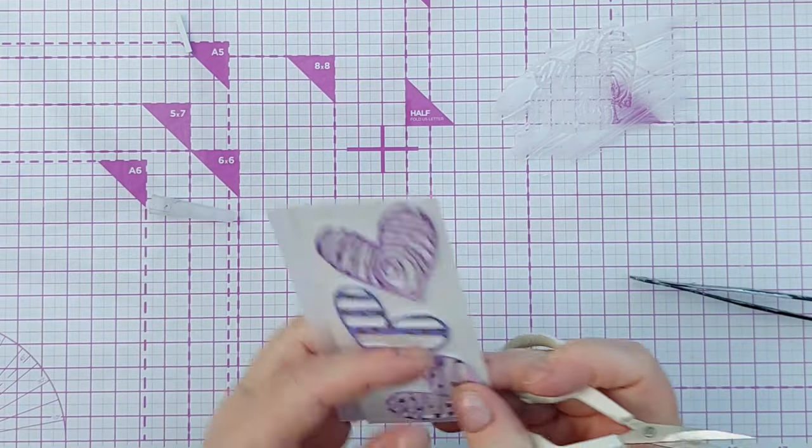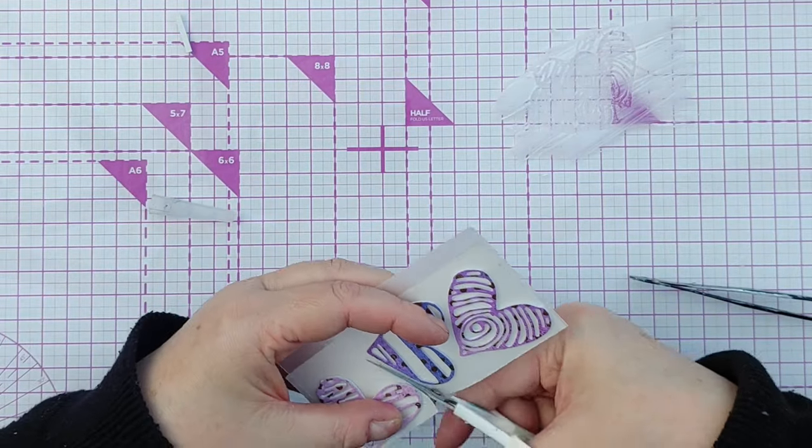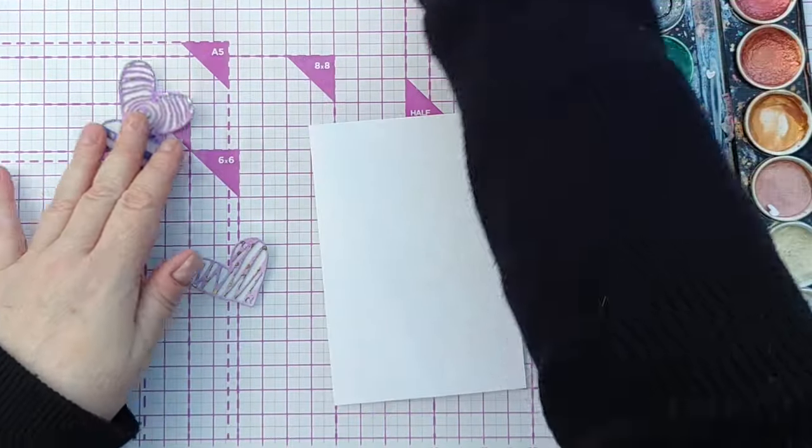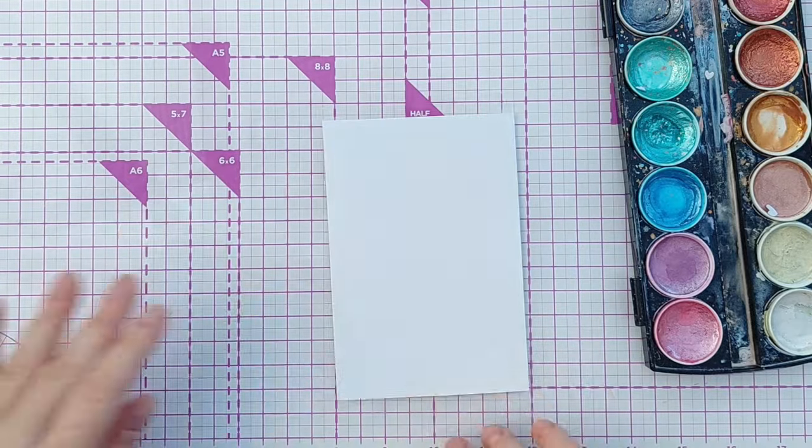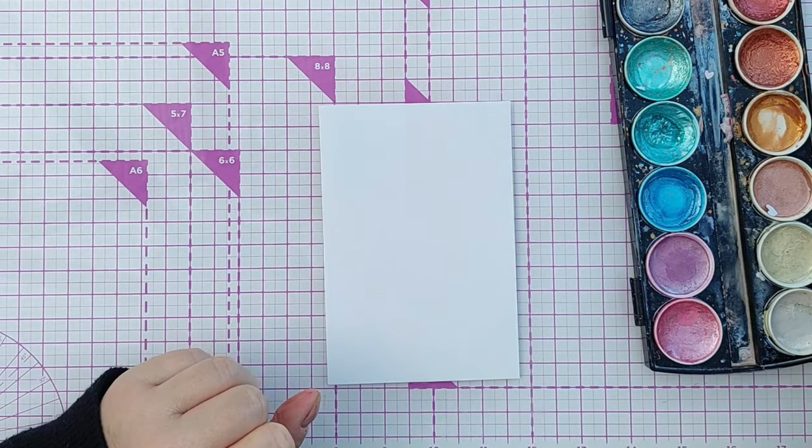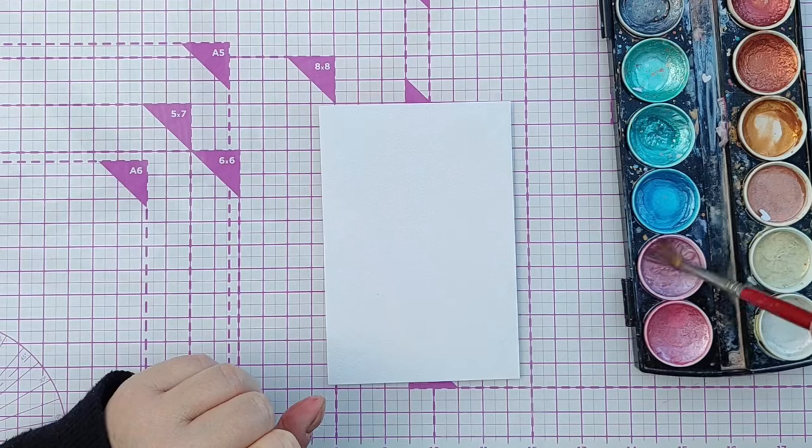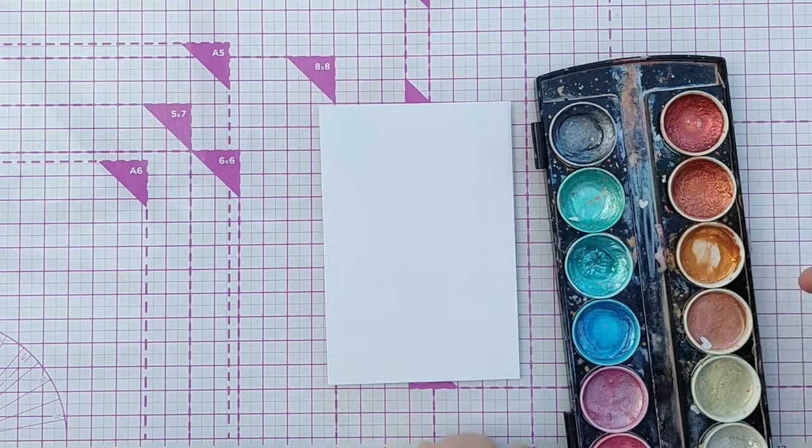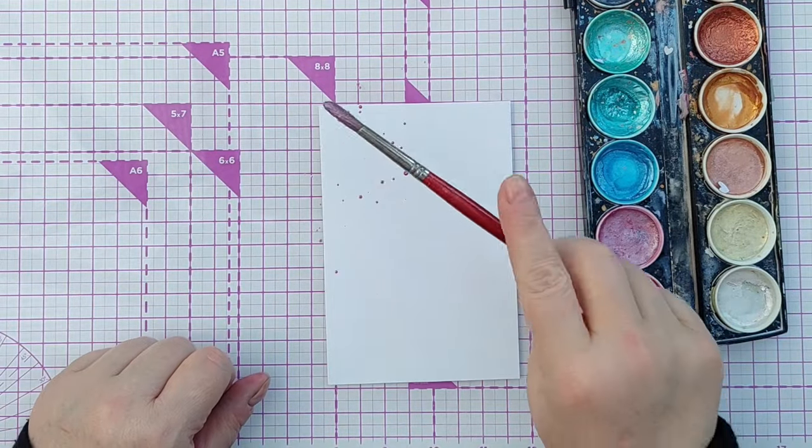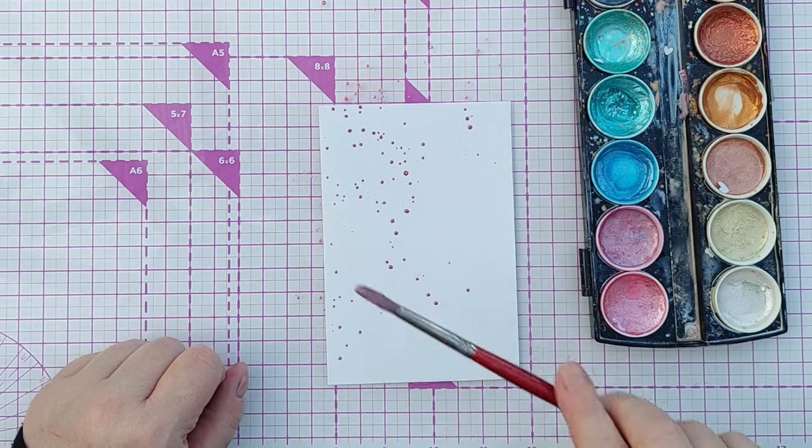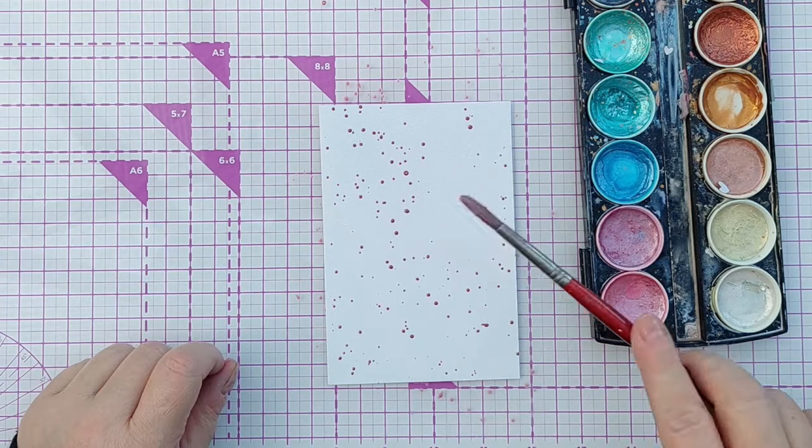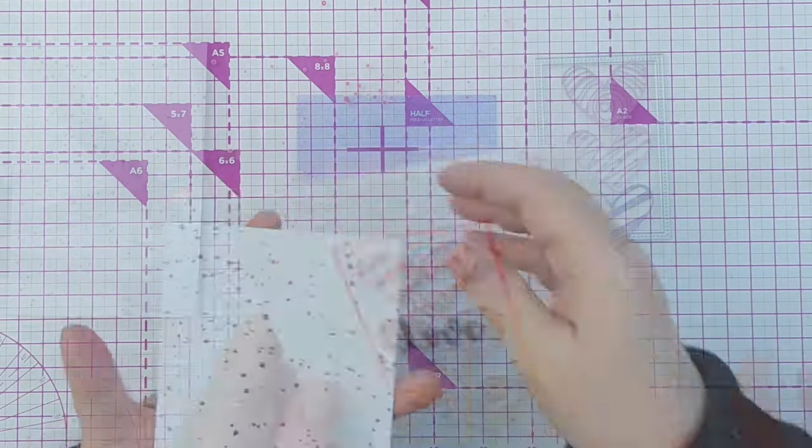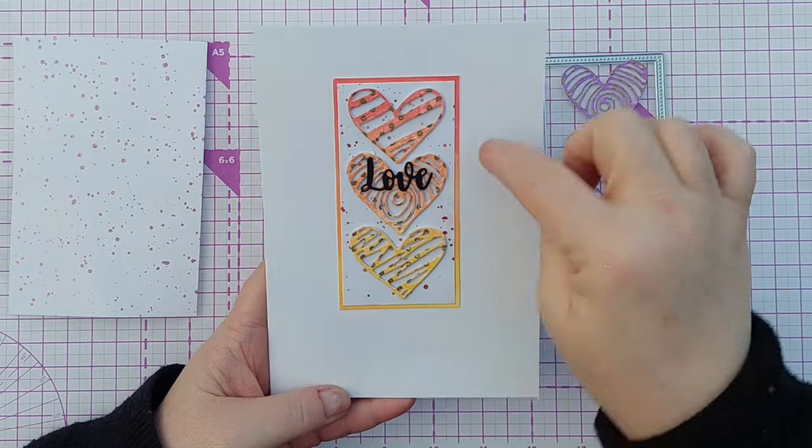I'll use my detail scissors to cut these out and this is really easy, not fiddly at all. The hearts are all done ready to go. I've got a bit of hammered white cardstock here and I'm going to spatter on some purple. On the original card I spattered on this copper, I think I'm going to go for the cool color spattering. I will dry that with my hair dryer.